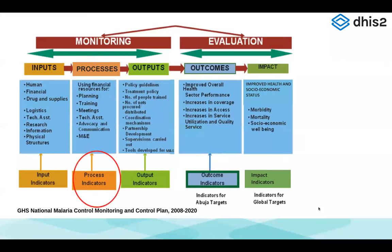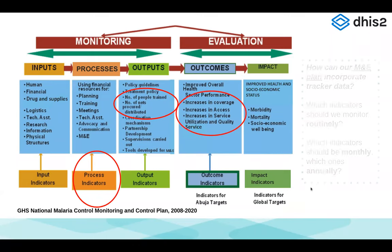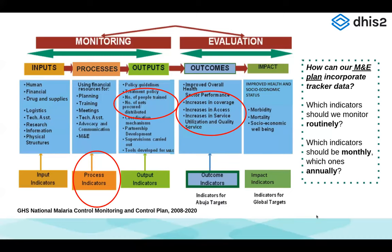Here's an example of an M&E framework from the Ghana Health Services National Malaria Control Center. The M&E framework also includes indicators — some process indicators, some outputs like number of people trained, number of nets procured and distributed, and some outcome metrics. Maybe your M&E plan could also incorporate tracker data. So you might go back to the program's national strategy and say we can actually contribute some data for program monitoring purposes — how would you define these different indicators and can we do this in DHIS2 tracker monthly, annually, et cetera?